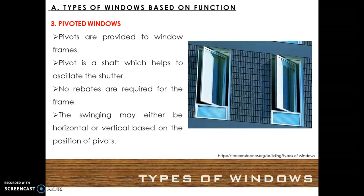Pivoted windows. Pivots are provided to the window frame. A pivot is a shaft which helps to oscillate the shutter. No rebates are required for the frame. The swinging may be either horizontal or vertical based on the position of the pivots.